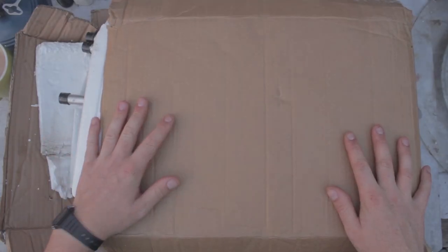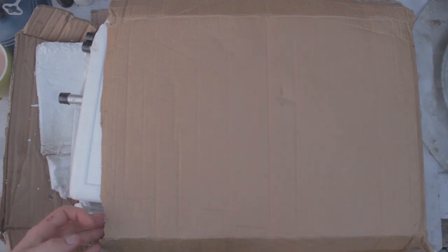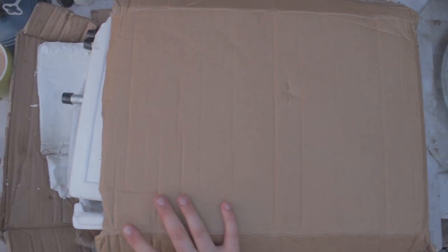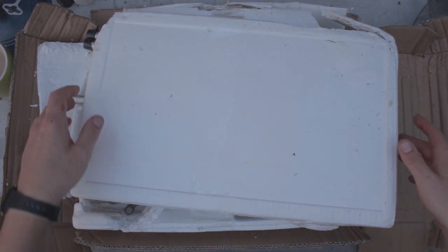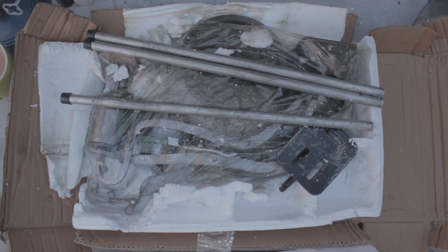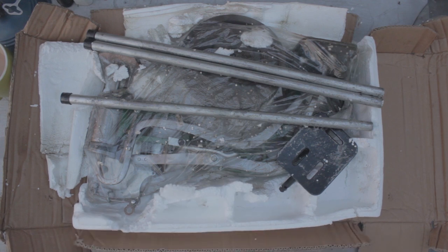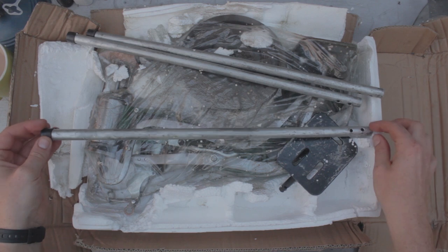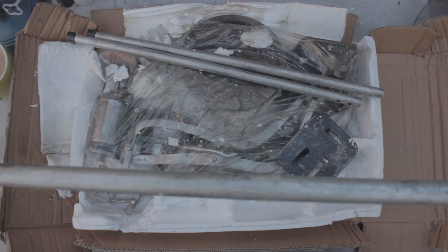So here it is, the Chinese shoe patcher slash leather sewing machine. This is basically how it arrives in a box like this, which was only slightly more put together. A lot of chipped up styrofoam and yeah, it is in a pretty dirty state when it arrives. Check this out.